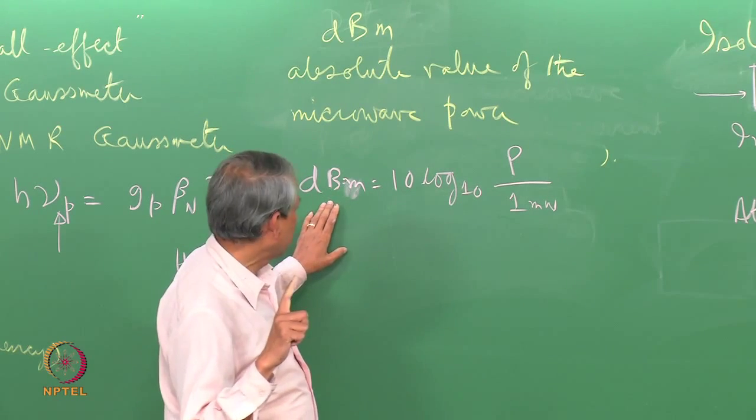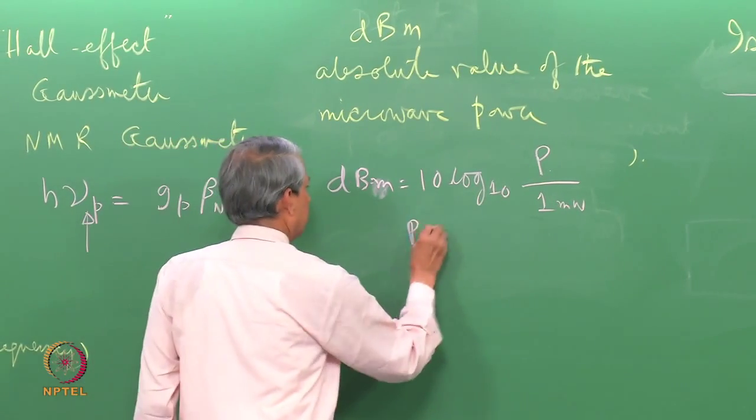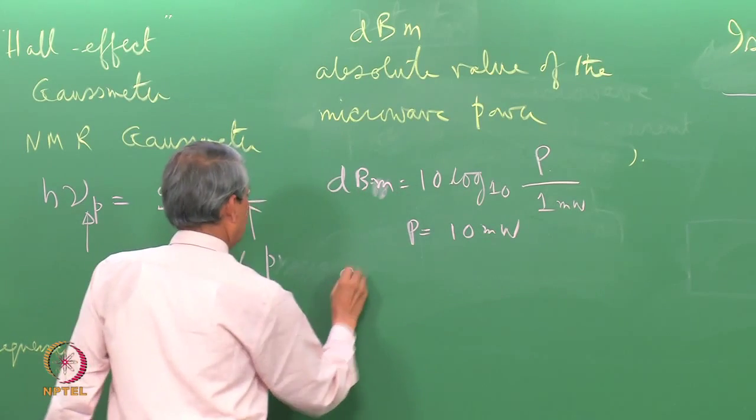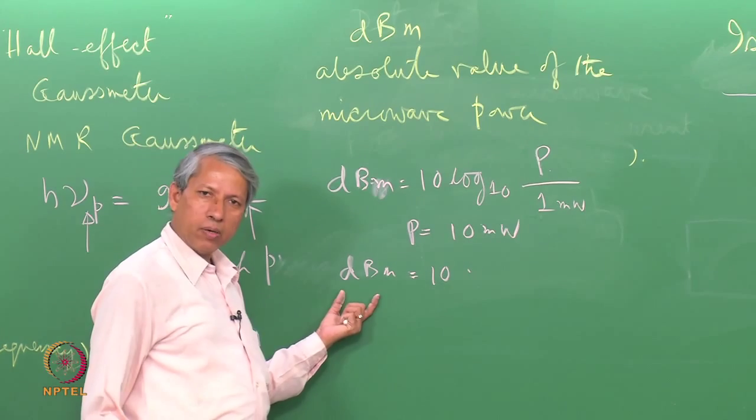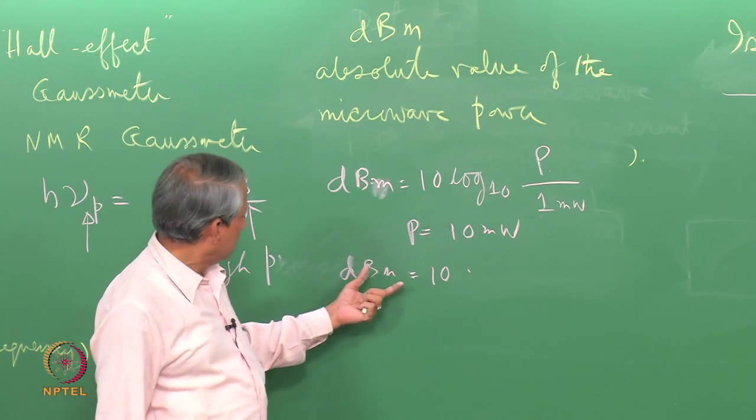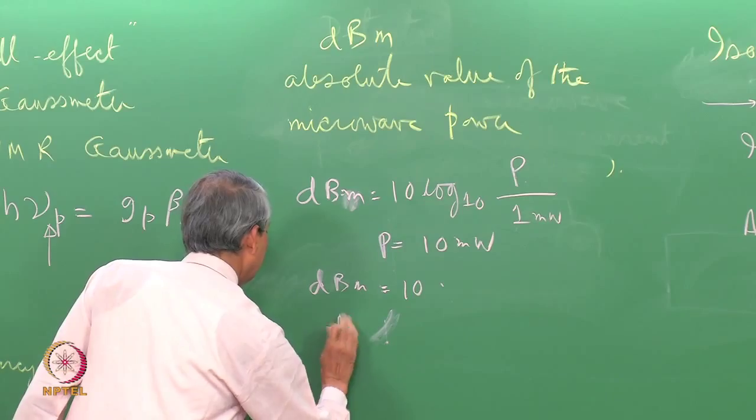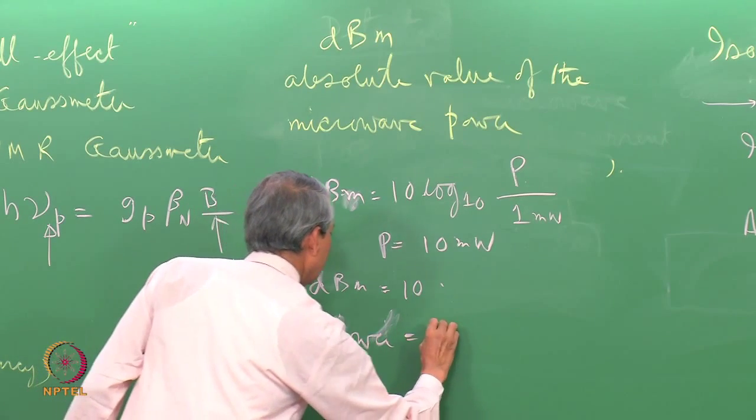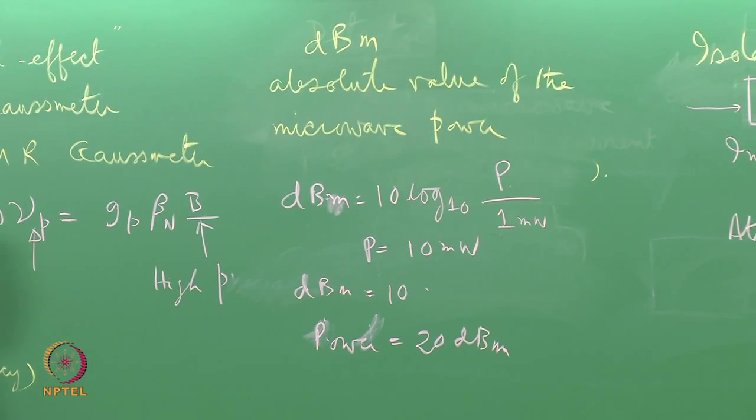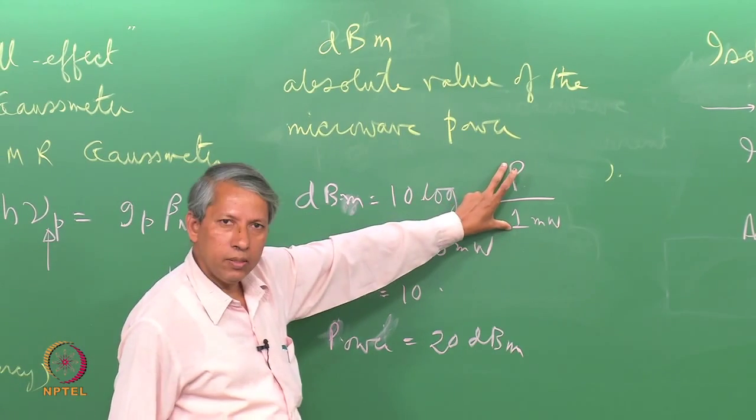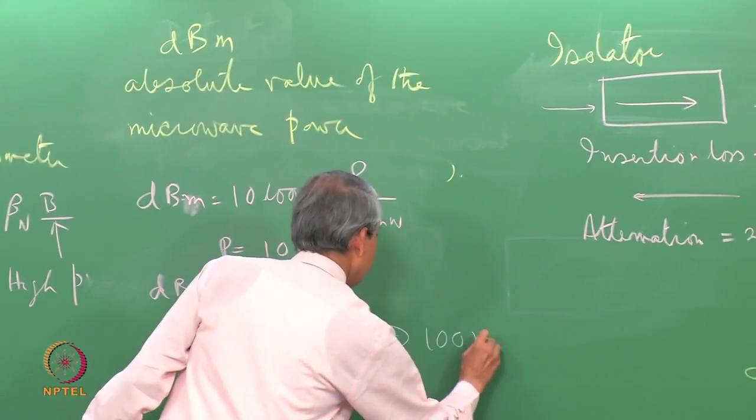If P is 10 milliwatt, then dBm will be 10 log 10, which is 1, so 10 dBm. So 10 dBm power is equivalent to 10 milliwatt of power. Similarly, the other way around: if power is equal to 20 dBm, what will be the actual power? This will be 20, so this ratio has to be 100. So 100 milliwatt of power corresponds to 20 dBm. This corresponds to 100 milliwatt.